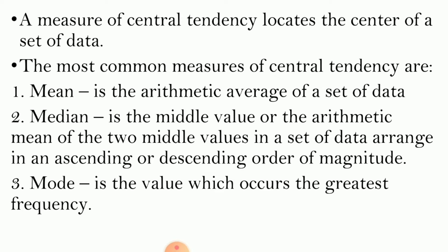The calculation of measures of central tendency can be ungrouped or grouped. When we say ungrouped, data are below 30. On the other hand, when it is grouped, data are 30 and above.